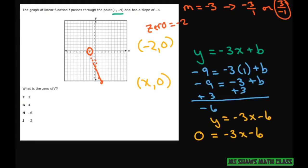So you add 6 to both sides. And I'm going to move over here. So you get 6 equals -3x.